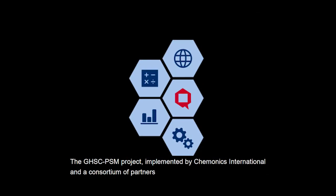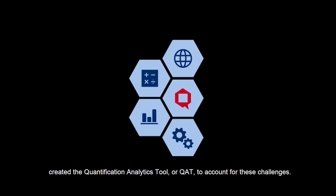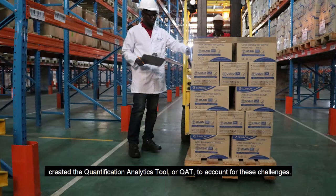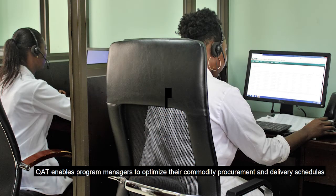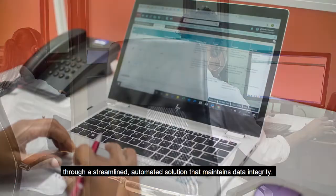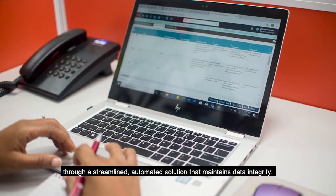The GHSC-PSM project, implemented by Chemonics International and a consortium of partners, created the Quantification Analytics Tool, or CAT, to account for these challenges. The CAT is a modernized solution to support collaborative planning with supply chain partners. CAT enables program managers to optimize their commodity procurement and delivery schedules through a streamlined, automated solution that maintains data integrity.